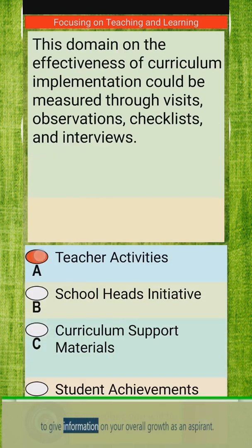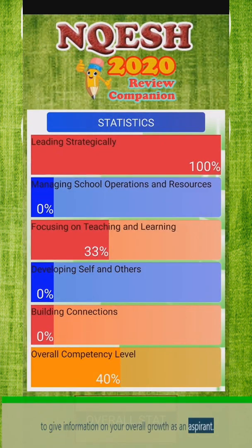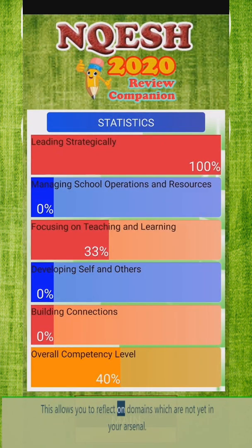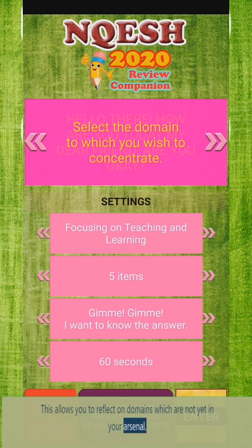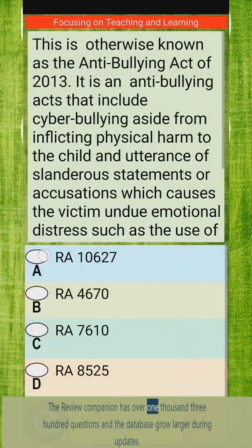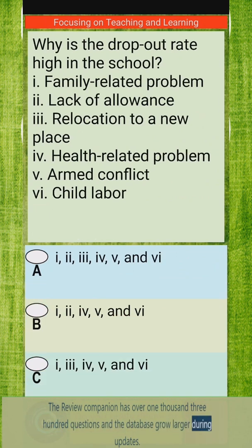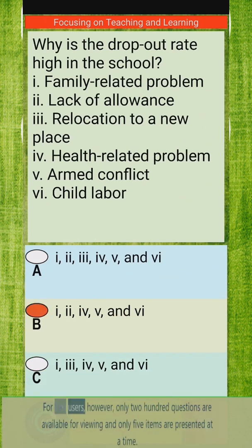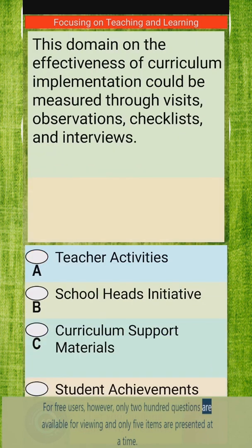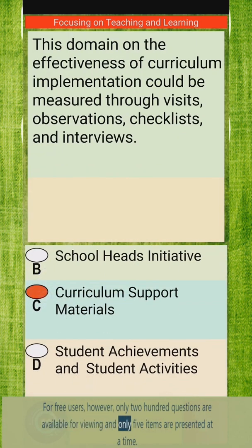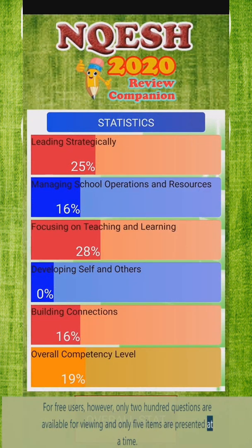Statistics are also provided to give information on your overall growth as an aspirant, allowing you to reflect on domains which are not yet in your arsenal. The Review Companion has over 1,300 questions and the database grows larger during updates. For free users, however, only 200 questions are available for viewing and only five items are presented at a time.